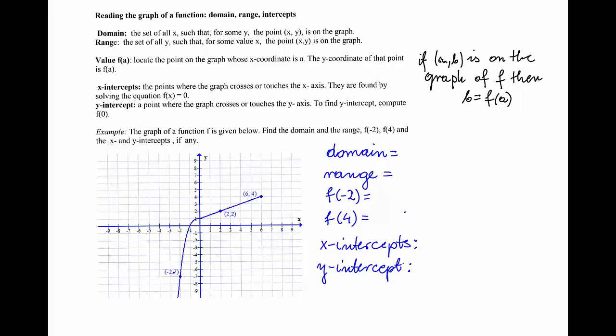The domain is the set of all the x's such that for some y the point (x, y) is on the graph, and the range is the set of all y's such that for some value of x the point (x, y) is on the graph.